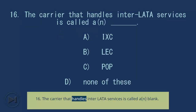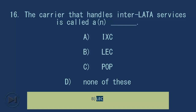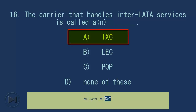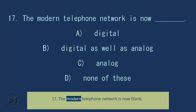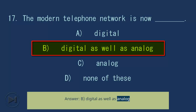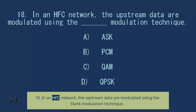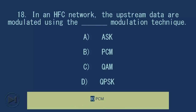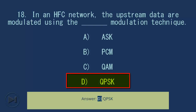Question 16: The carrier that handles inter-LATA services is called a/n blank. A. IXC. B. LEC. C. POP. D. None of these. Answer: A. IXC. Question 17: The modern telephone network is now blank. A. Digital. B. Digital as well as analog. C. Analog. D. None of these. Answer: B. Digital as well as analog. Question 18: In an HFC network, the upstream data are modulated using the blank modulation technique. A. ASK. B. PCM. C. QAM. D. QPSK. Answer: D. QPSK.